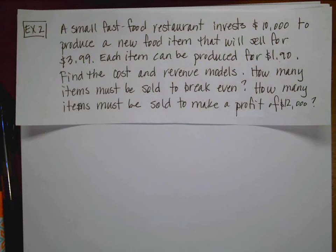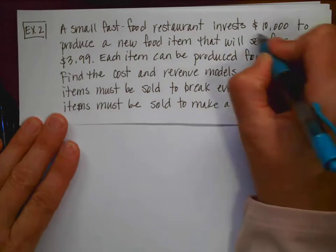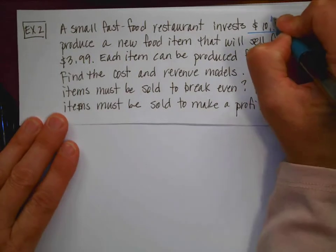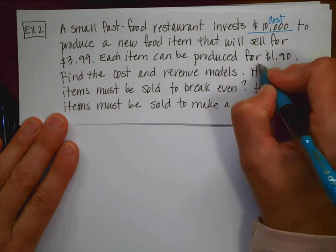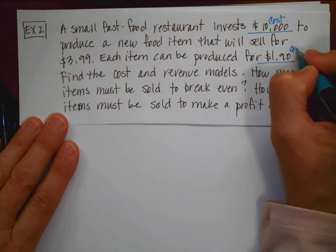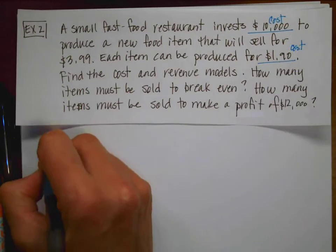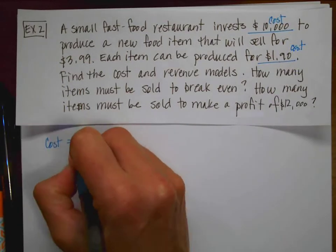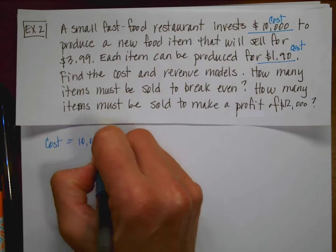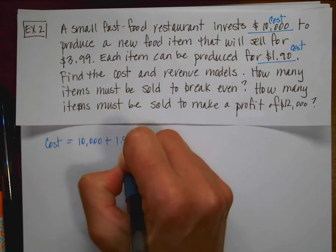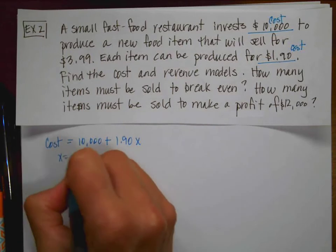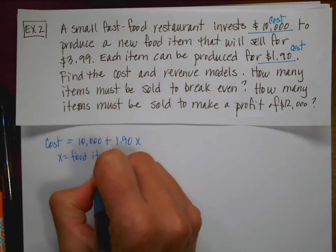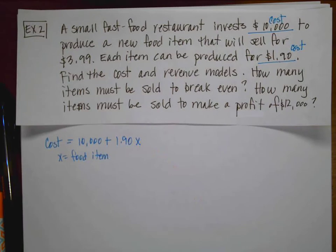So we're going to start this process exactly the same. So let's talk about the $10,000 is a cost. And it costs me $1.90. So my cost model is going to equal my initial outlay of cash plus however much it costs me to make a food item. And X is going to equal a food item, whatever that might happen to be.